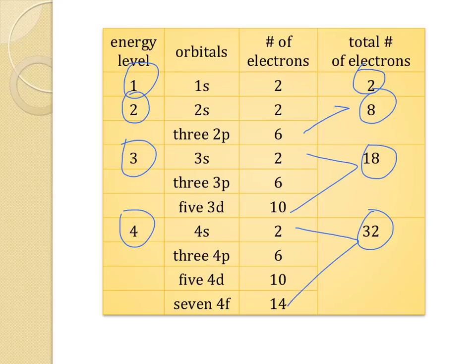So in this lesson, we've talked about the quantum mechanical model of the atom: how in that model we treat the electron as a wave, that the energy is still quantized, that the electron location is defined according to probability, and that electrons would be located in orbitals. Orbitals and electrons within orbitals are described using four quantum numbers — energy level, orbital shape, orbital orientation, and electron spin.